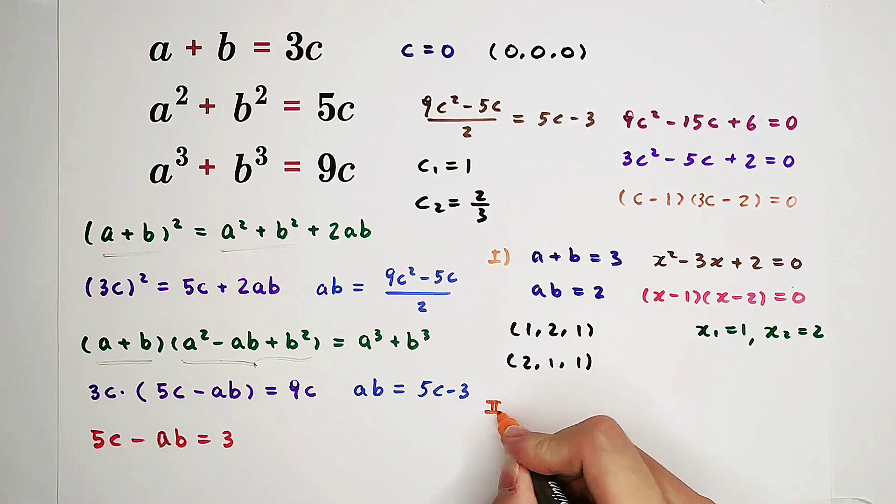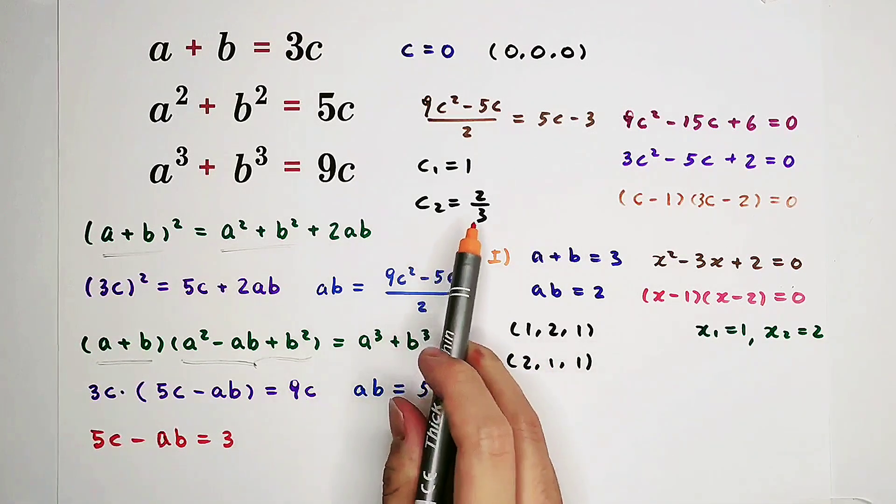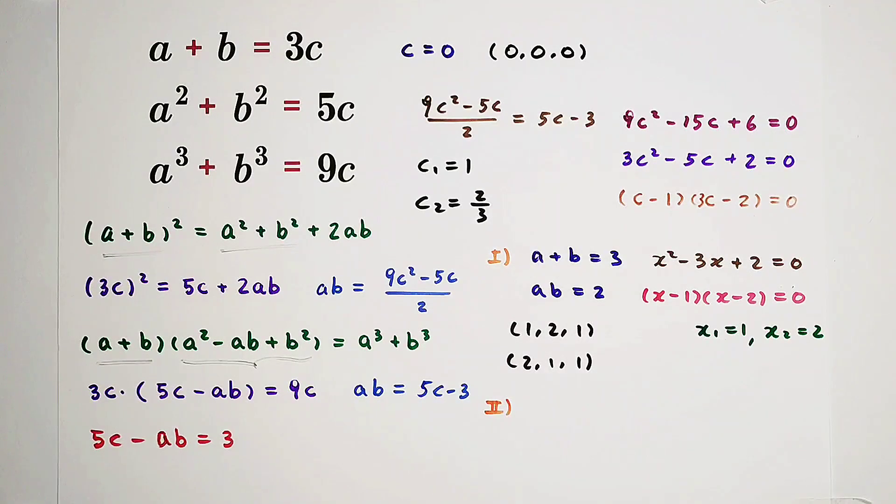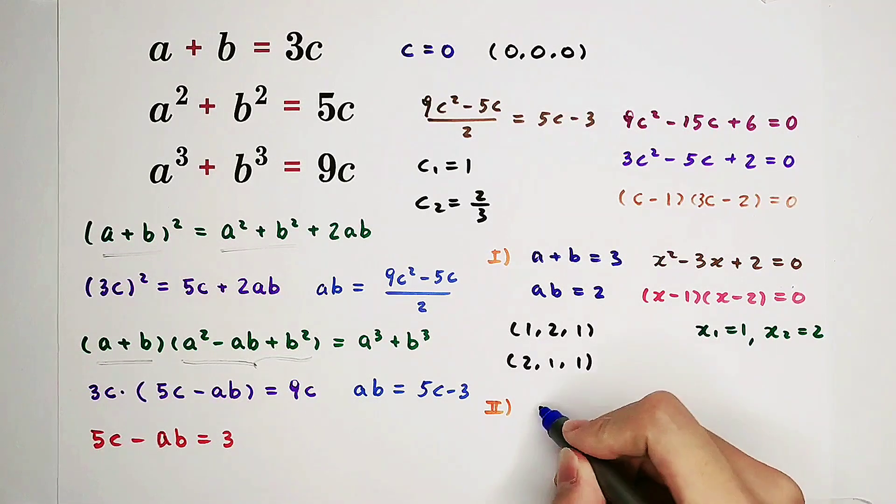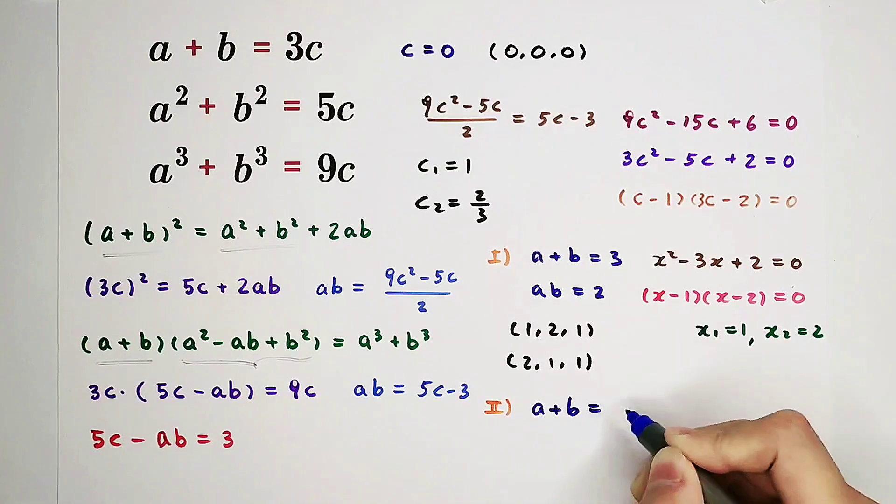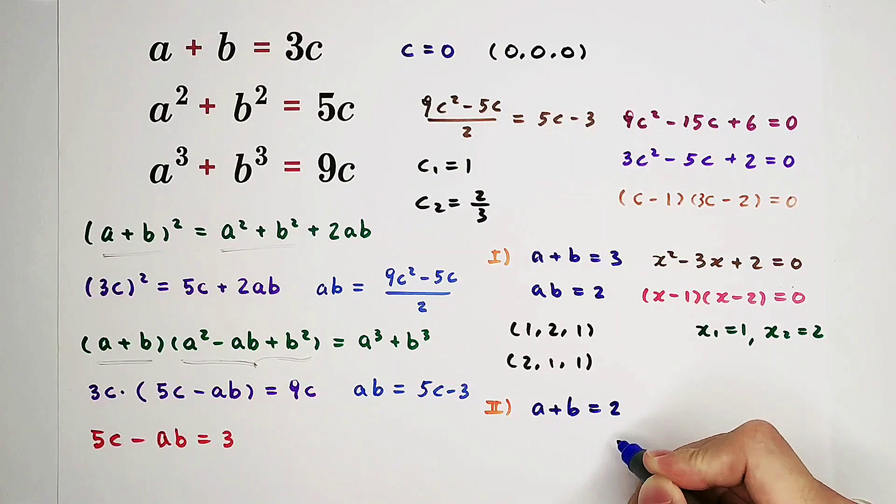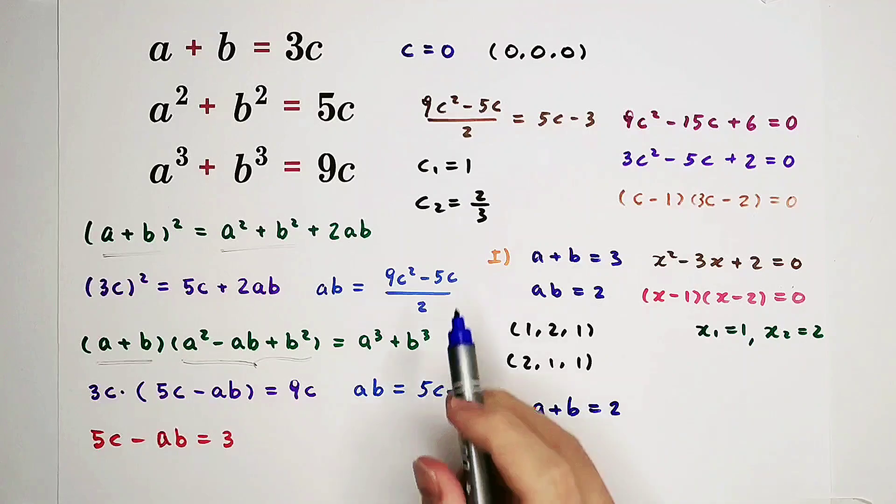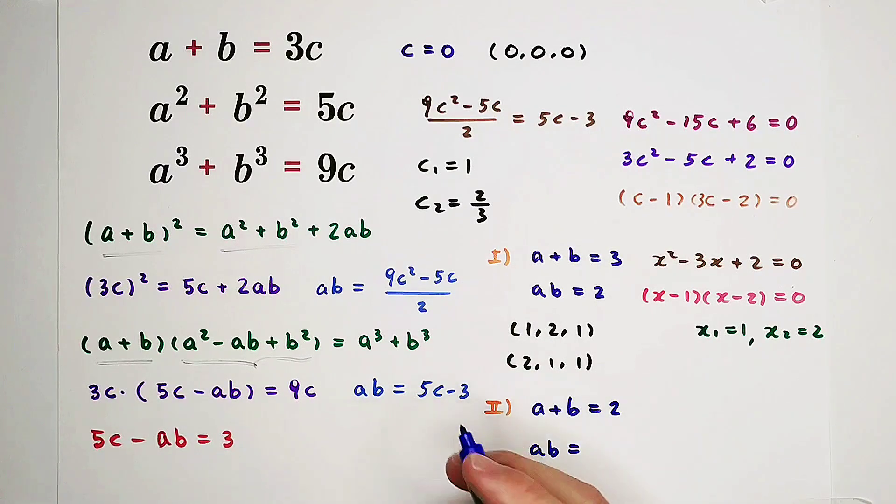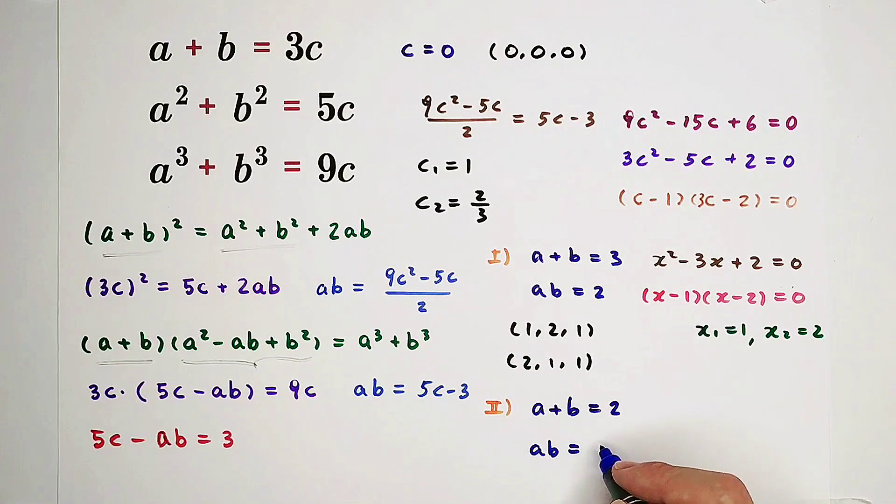Of course, we also have our second case. If c is equal to 2 thirds. In our case, it is much more complicated. The same method. a plus b is 3 times c. It is 2. a times b, it is 5 times this one minus 3. It is 1 third.